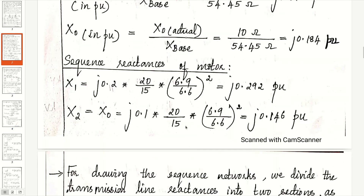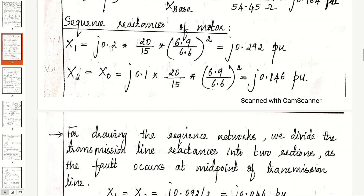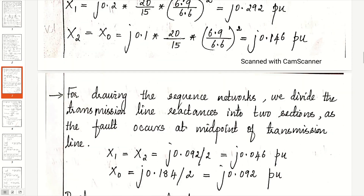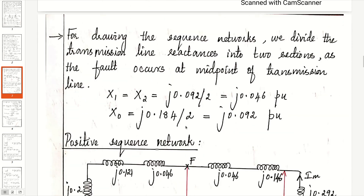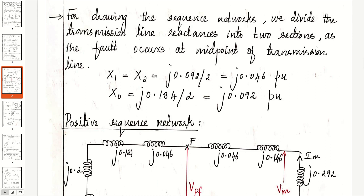For the motor, X1 is j0.292 per unit and X2 equals X0 equals j0.146 per unit. For drawing the sequence networks, we divide the transmission line reactances into two halves because the fault occurs exactly at the midpoint of the transmission line. So X1 equals X2 equals 0.092 divided by 2, which is j0.046, and X0 is j0.092 per unit.